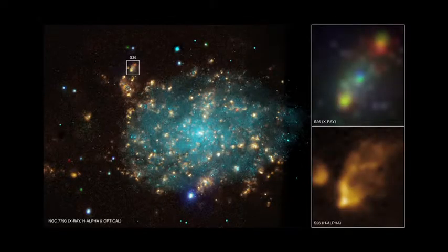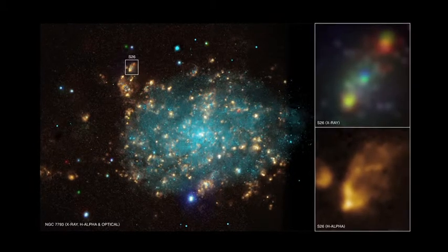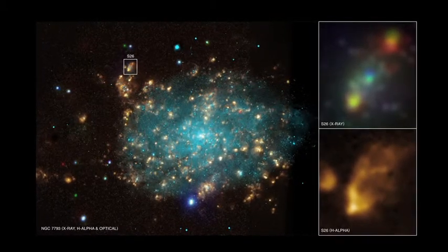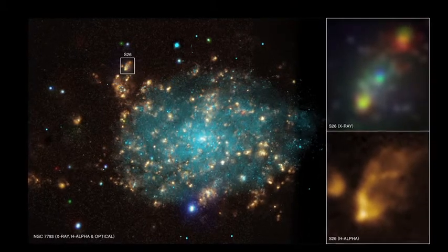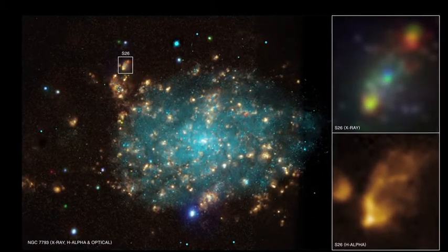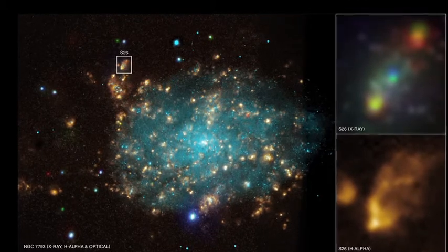NASA's Chandra X-ray Observatory has scanned a powerful microquasar on the outskirts of galaxy NGC 7793. In astronomy terms, this galaxy is close to the Milky Way, only 12.7 million light-years away.